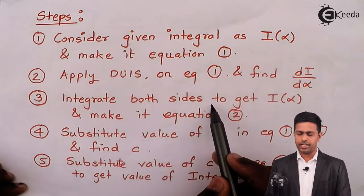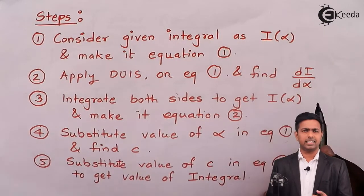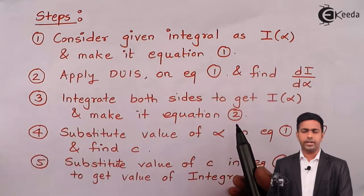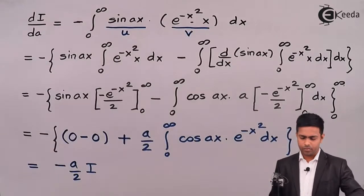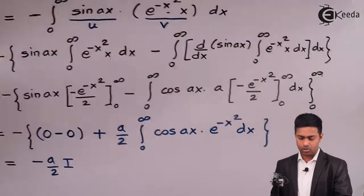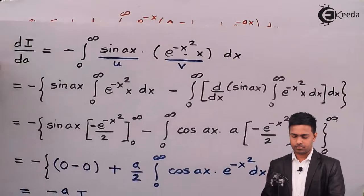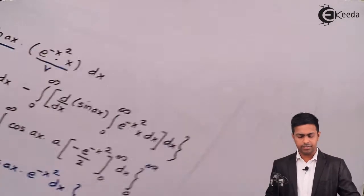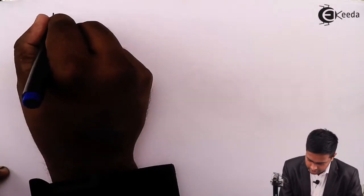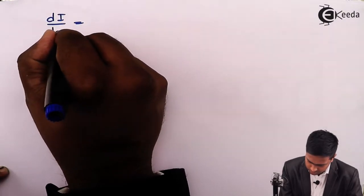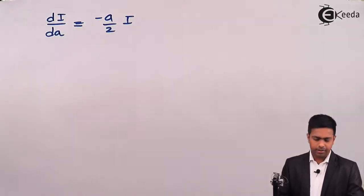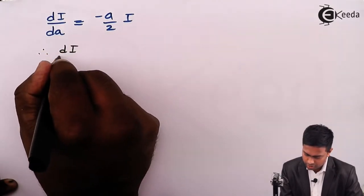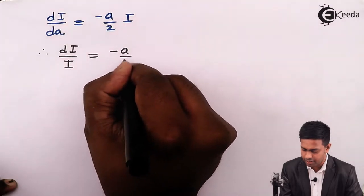Here we got the value of dI/da = minus a/2 · I, completing step 2. Now moving to step 3: we integrate both sides to get I(a). Rewriting: dI/da = minus a/2 · I becomes dI/I = minus a/2 · da.